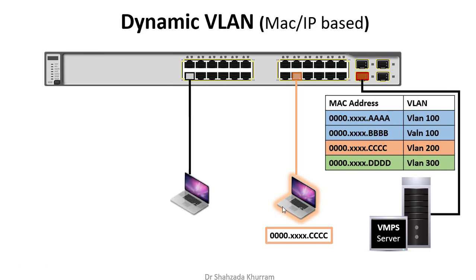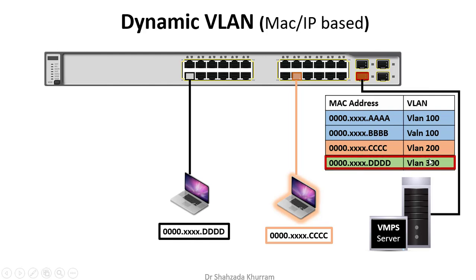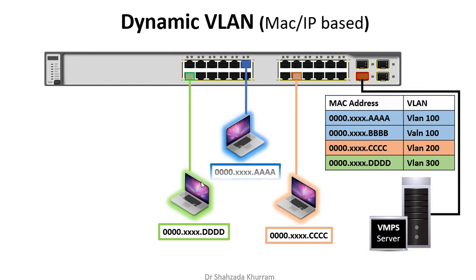Agar phir ek aur PC connect karta hai, to phir uska MAC address dekhega, apne database ke andar check karega. Agar yeh VLAN 300 se hai to basically isko VLAN 300 ka part bana dega. Same way, agar koi aur PC aata hai uska bhi MAC check karega aur usko usi VLAN ka part bana dega. Is tarah hum dynamically VLANs assign kar dete hain based on MAC aur IP.